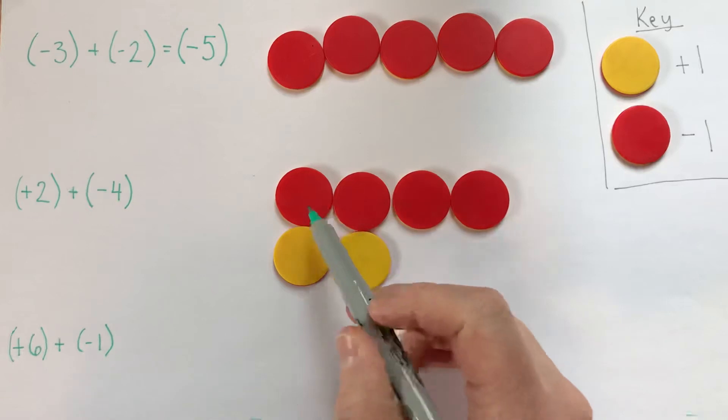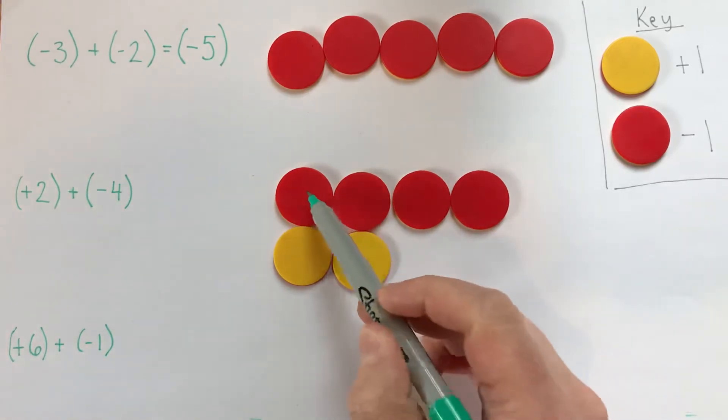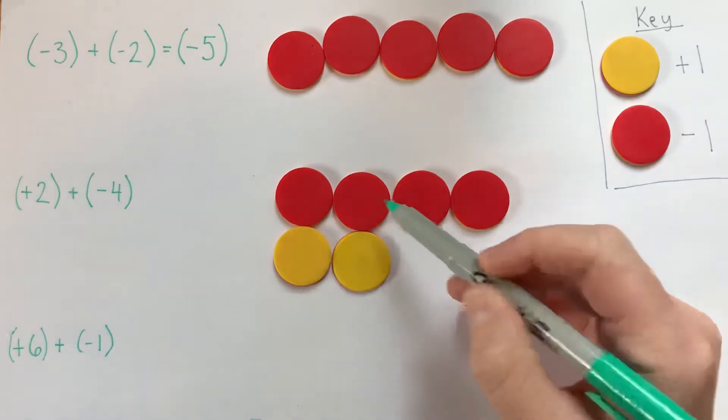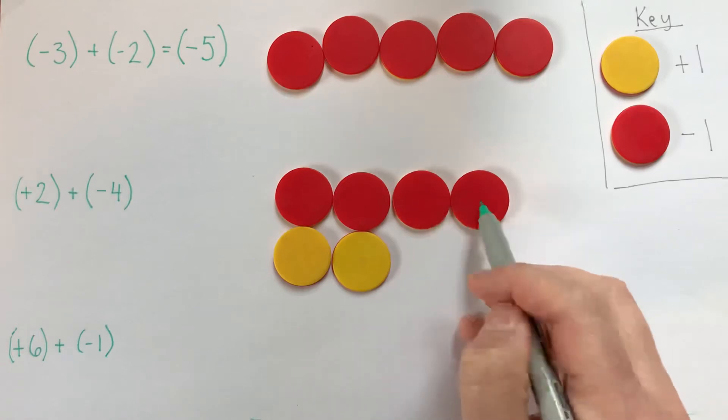If I put them all in a line, and put the zero pairs on one end of the line, then I can see this is worth zero, and this is worth zero. So all together, this is negative one, negative two,